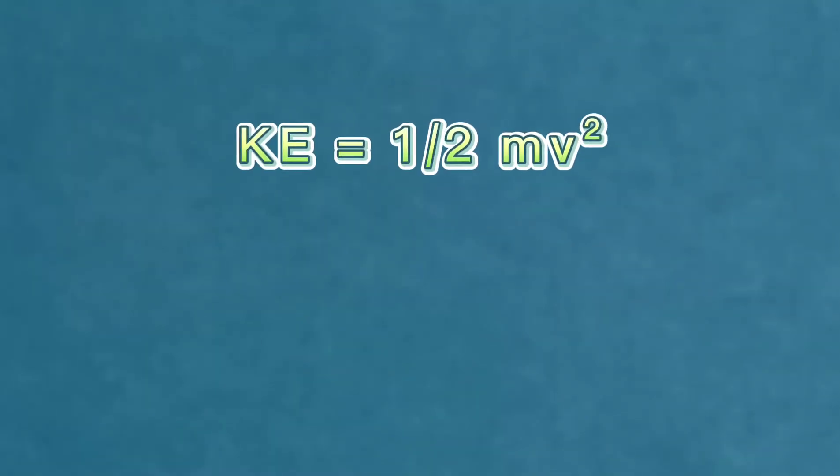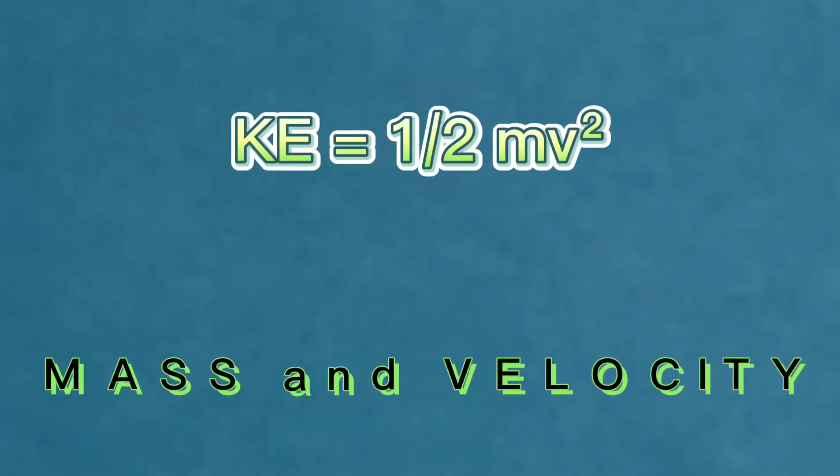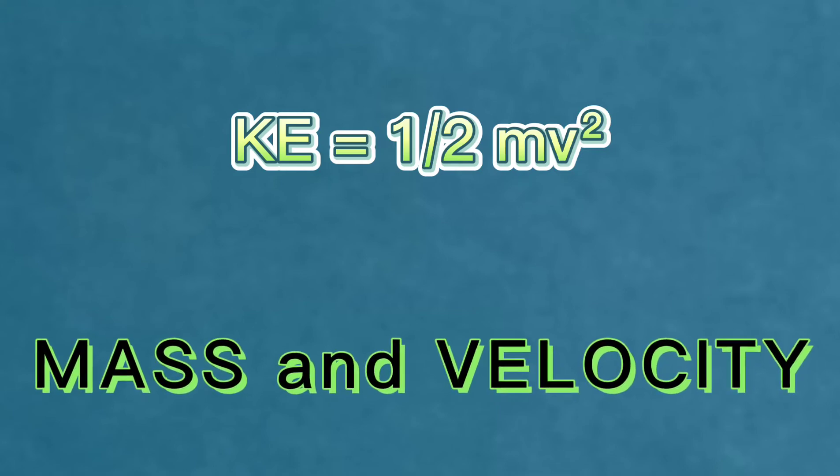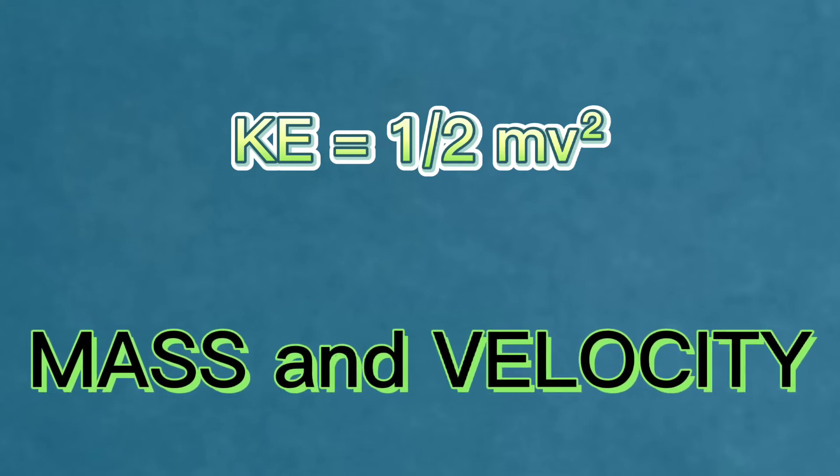Joules is the unit of energy. Based from the equation, we can say that the two factors that can affect kinetic energy are the mass and velocity. When an object's mass doubles, its kinetic energy also doubles. And the faster an object moves, the more kinetic energy it has.